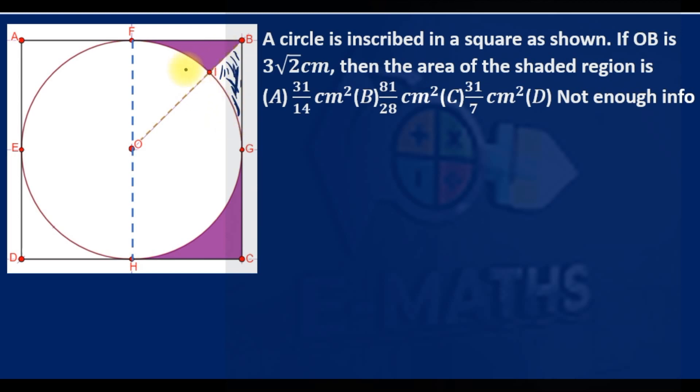You notice that the area of the shaded region—that is here, here, and here—is the area of the rectangle minus area of the semicircle. That is it.